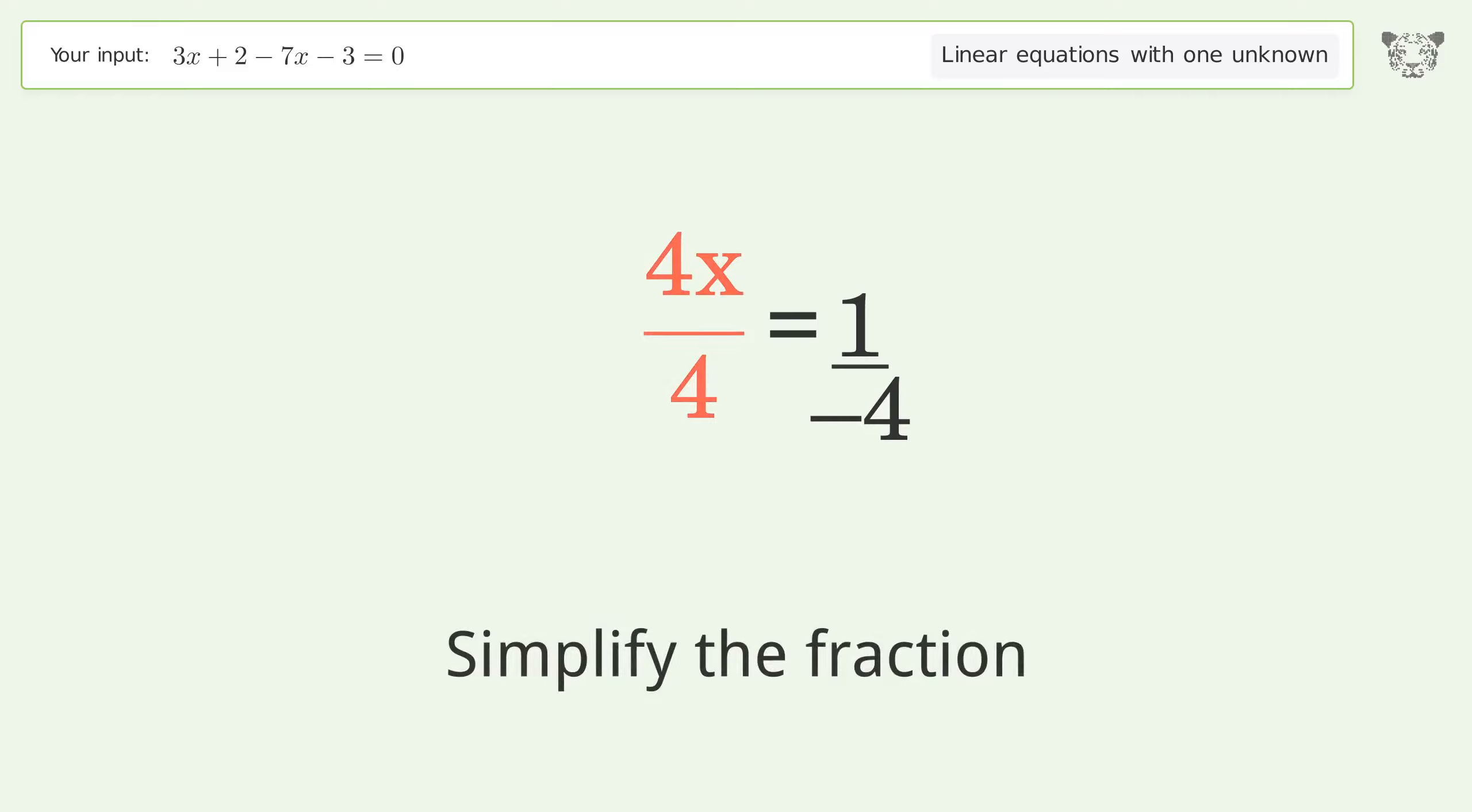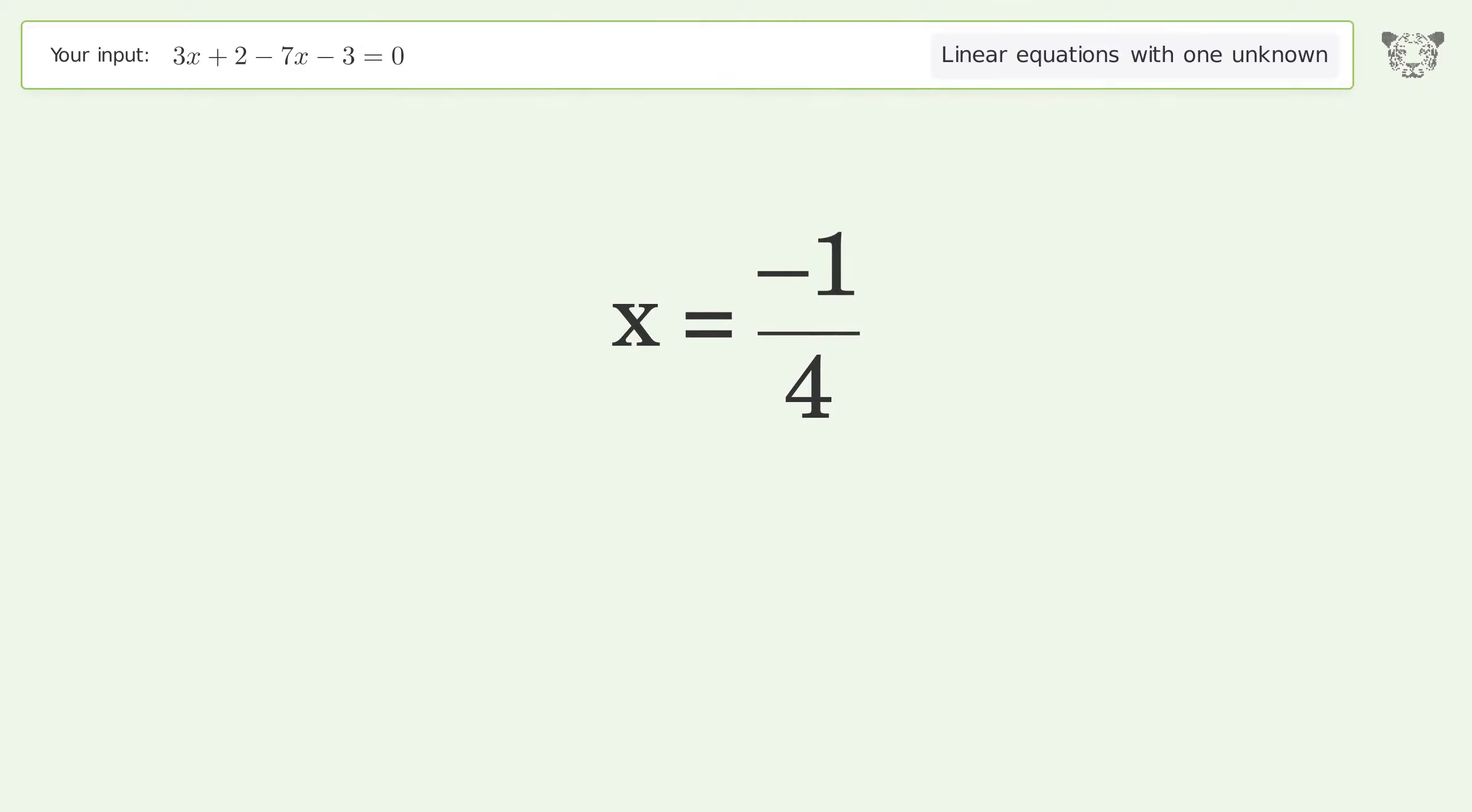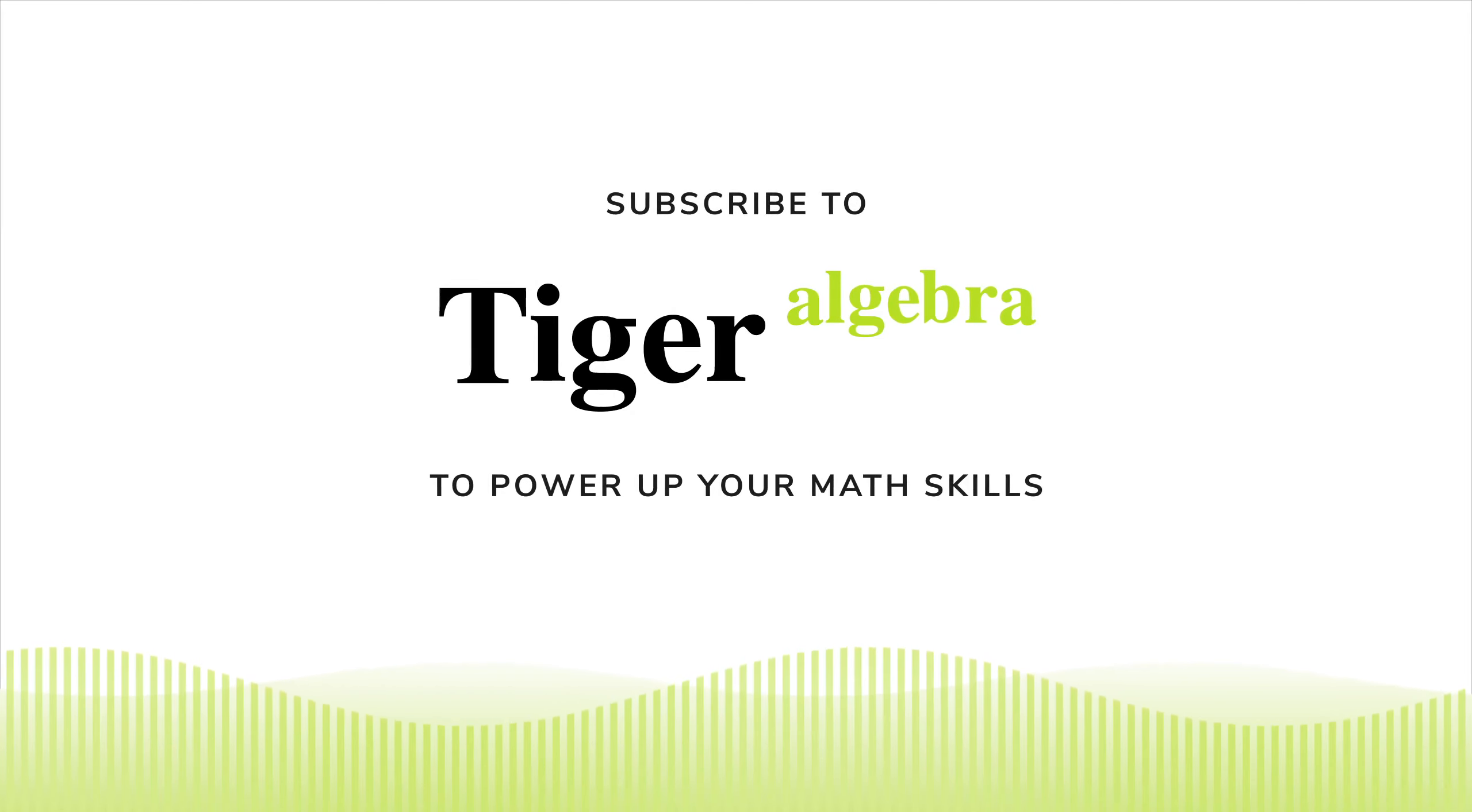Simplify the fraction. Move the negative sign from the denominator to the numerator. And so the final result is x equals negative 1 over 4.